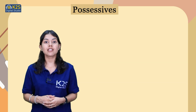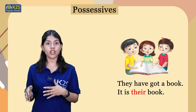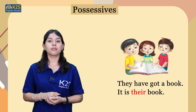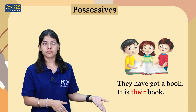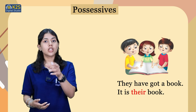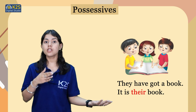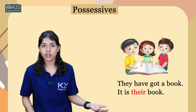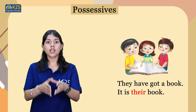The last example shows three children holding a book. The sentences are: They have got a book. It is their book. We use 'they' because there is more than one person. We cannot use 'his' or 'her' here because there is more than one person and more than one gender. So we use 'their' instead, and the possessive used here is 'their'.